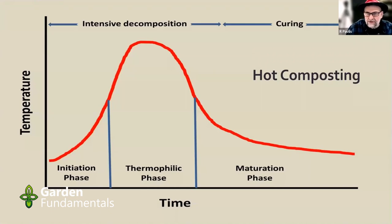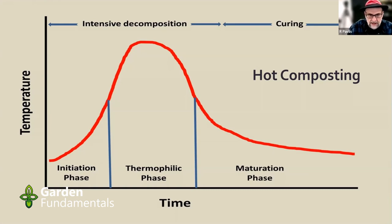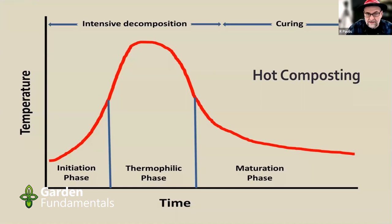So what happens during a traditional hot composting process? On the left side of this graph we're measuring temperature, and on the bottom is time. We make the compost pile and go through an initiation phase where temperature starts rising, then a thermophilic phase where we reach maximum temperature, then the pile starts cooling off through a fairly long maturation process where temperature is slowly dropping. At the end of the chart we have finished compost.